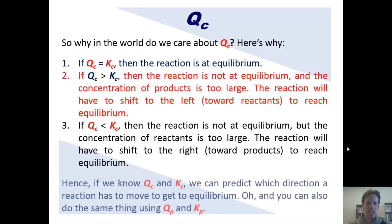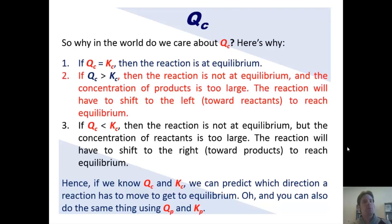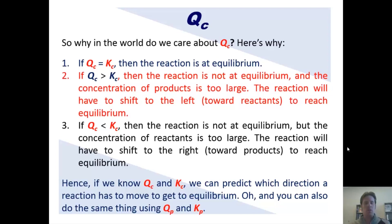So the point is, if we know QC and we know KC, then we can predict which direction a particular reaction has to move or shift in order to reach equilibrium. You can also do the same thing using QP and KP.